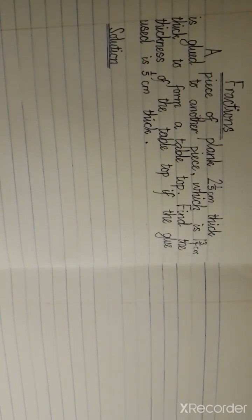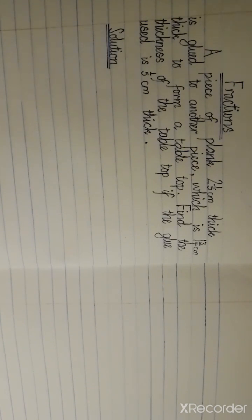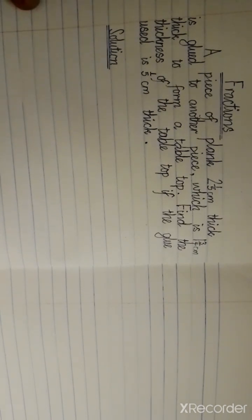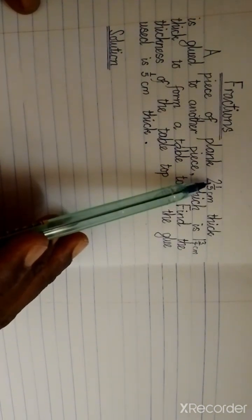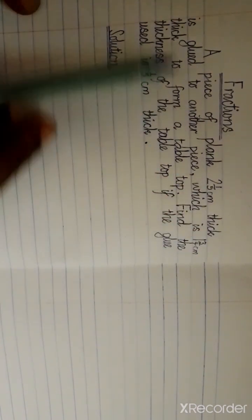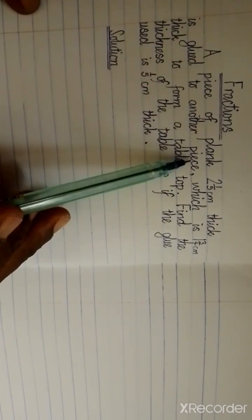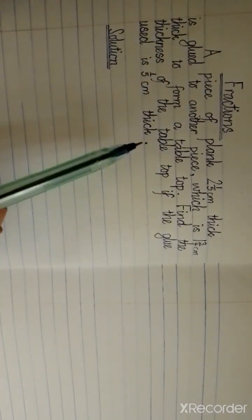Today in fractions we'll be looking at addition and subtraction of fractions. You have to take notes. When fractions are put together or when we have to find the difference, here we're told that a piece of plank two whole number one over five centimeters thick is glued to another piece.